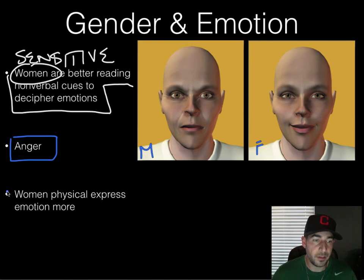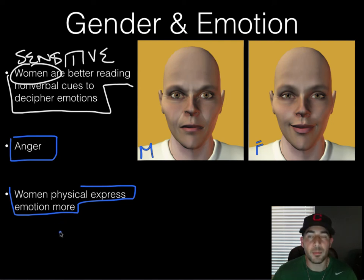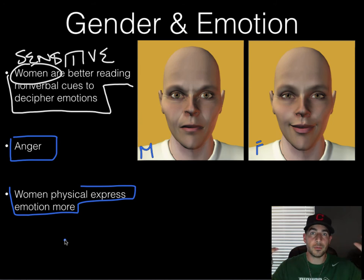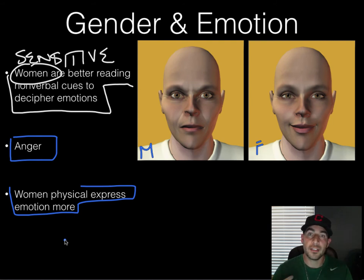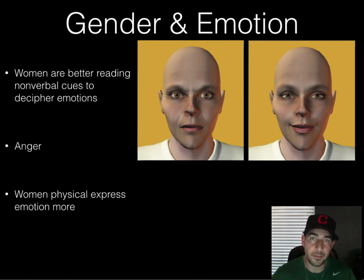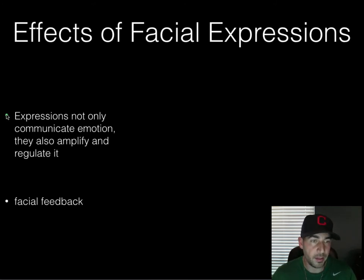Women physically express emotion better than men. When watching sad movies, men and women afterwards self-described as feeling about the same emotions, so it's not that men don't have the same emotions as women — they just don't express it as well. In a naturalistic observation in a movie theater, men didn't react as much as women during the movie, but on the survey, men were equal to women in how they felt.